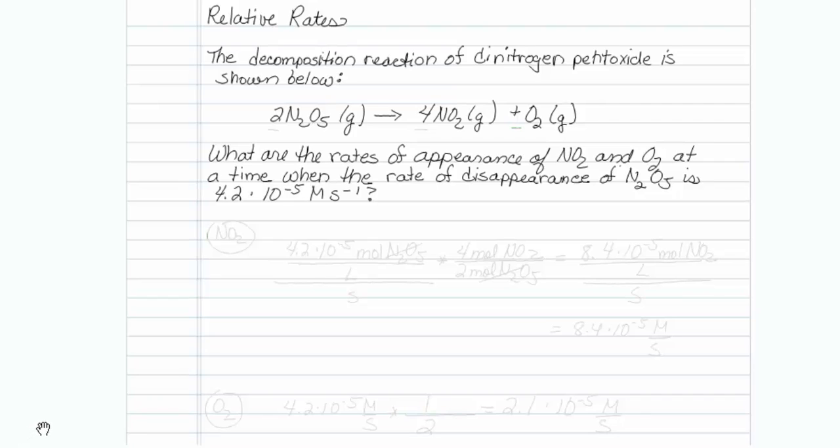What are the rates of appearance of NO2 and O2, because they're products, at a time when the rate of disappearance of N2O5, the reactant, so it's disappearing, is 4.2 times 10 to the minus 5th molar per second.